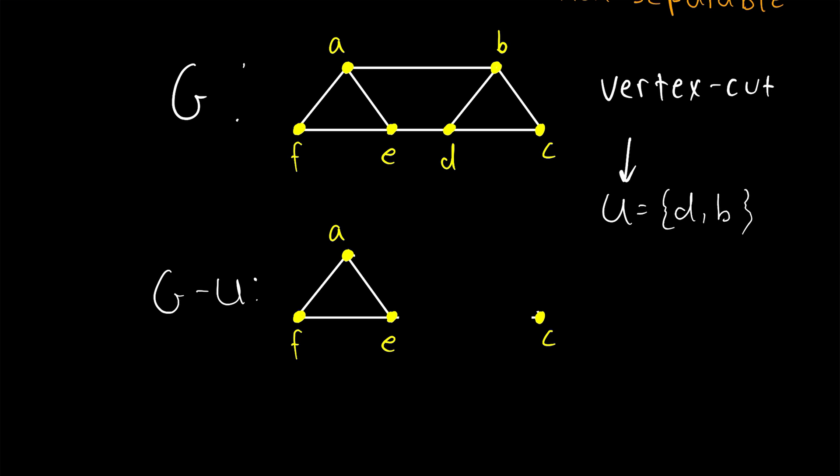And so as you might guess, we say that U is a vertex cut of the graph G. It's a set of vertices that cuts the graph. Notice as well that the set containing A and E would have been another vertex cut with the same number of vertices.